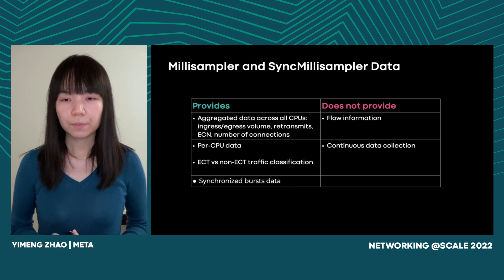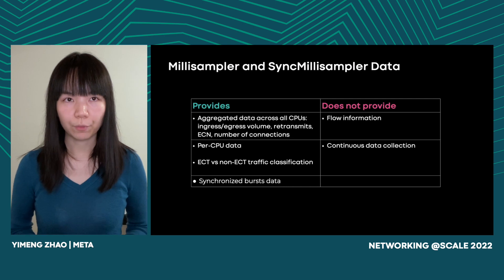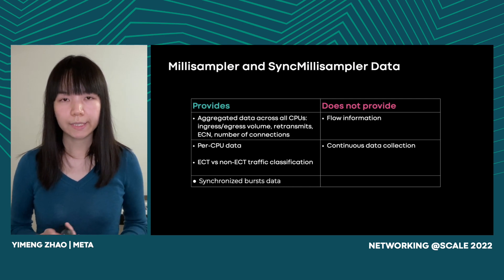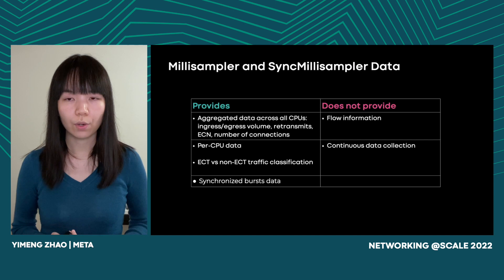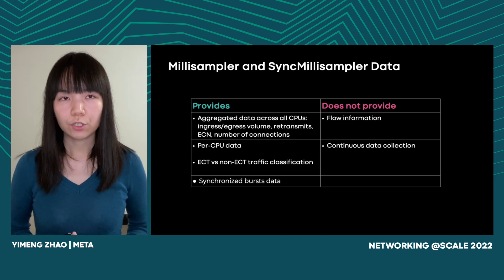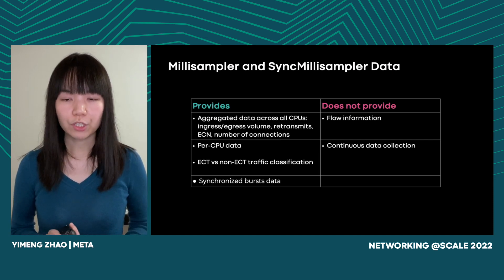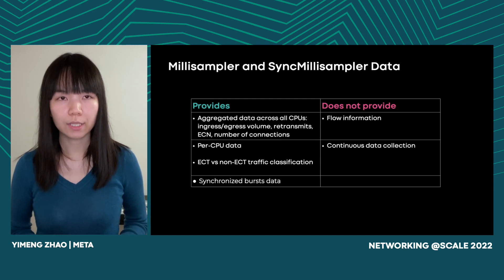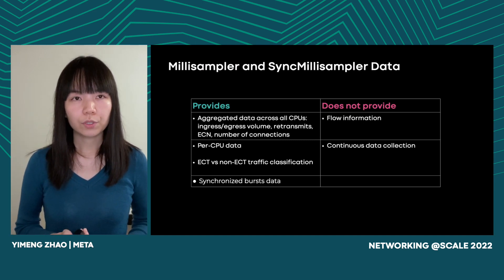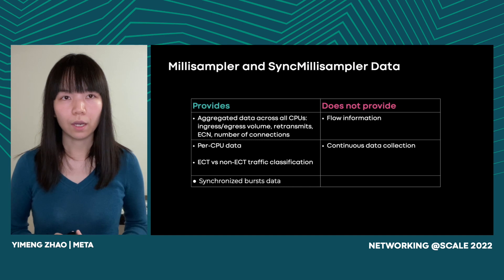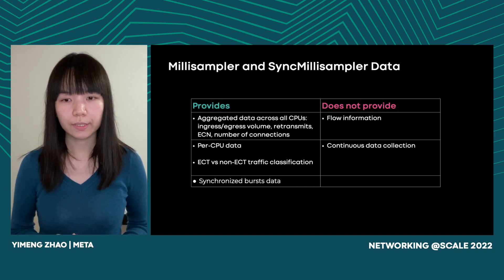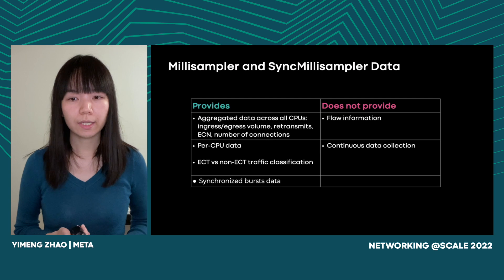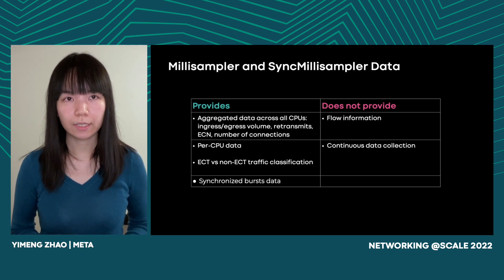In summary, MiniSampler and Sync MiniSampler provide aggregated traffic data points across all CPUs, including ingress and egress traffic volume, retransmits, ECN, and number of connections. What MiniSampler doesn't provide is flow information — we use a sketch to estimate the number of connections, so we don't store information about individual flows such as IP addresses and port numbers. Also, MiniSampler wakes up every few minutes to do data collection, so it's not continuously collecting data.